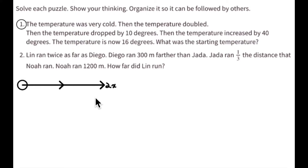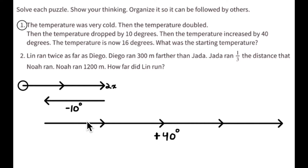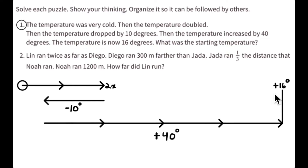If the starting temperature is x, then this temperature here is going to be 2x. The temperature then drops by 10 degrees, so it gets 10 degrees colder — that's 10 units to the left, so negative 10 degrees. That gets added on, and then the temperature increases by 40 degrees, which is four times that 10-unit length in the positive direction — a positive 40 degrees — and we know the temperature ends at a positive 16 degrees.